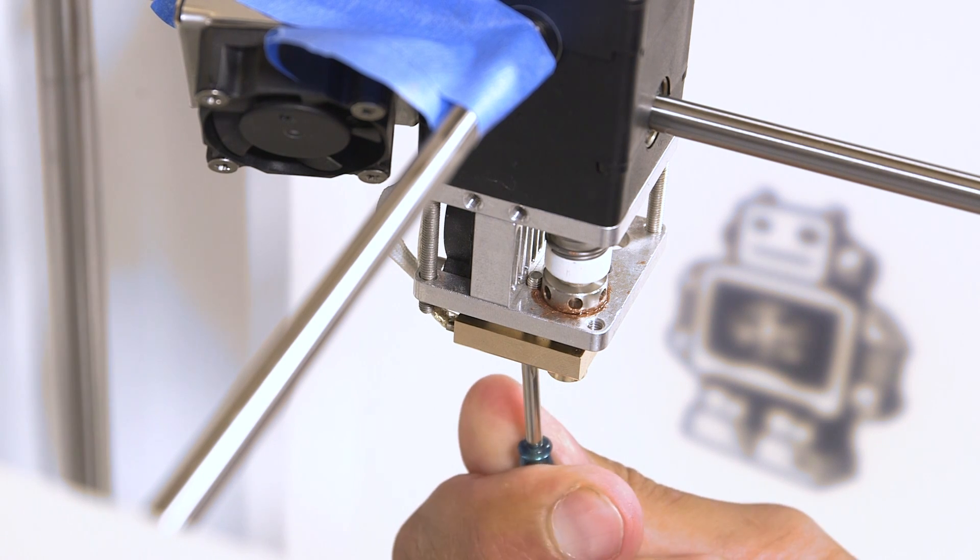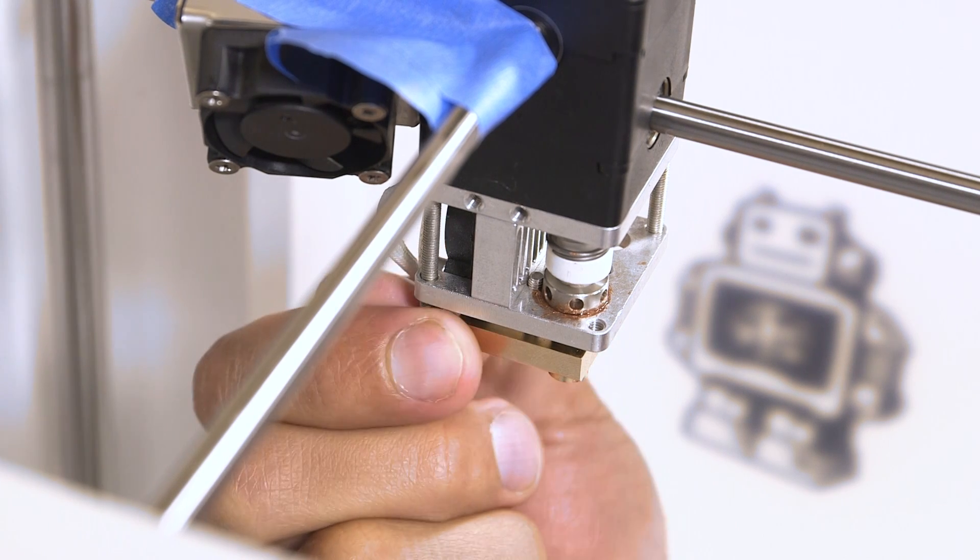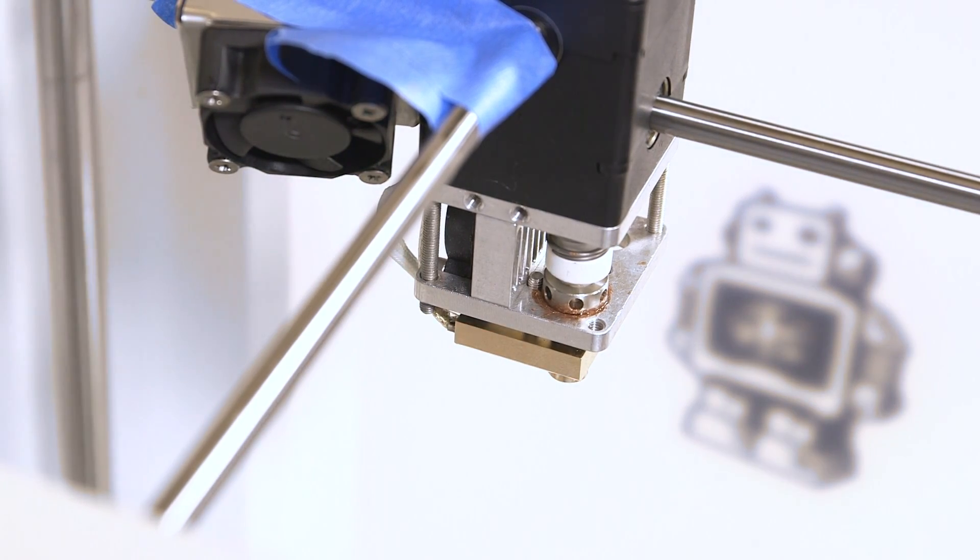The set screw has been aligned with the corresponding hole in the printhead's aluminium plate. Gently pull on the cables to see if the sensor and heater remain in place.